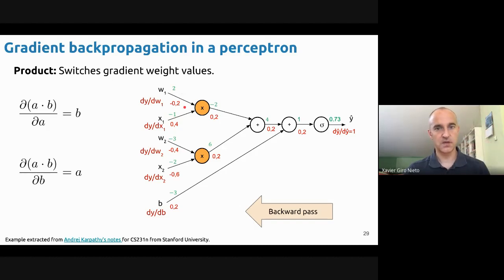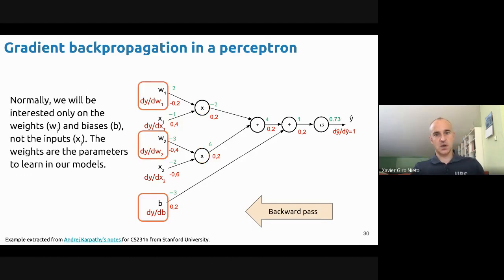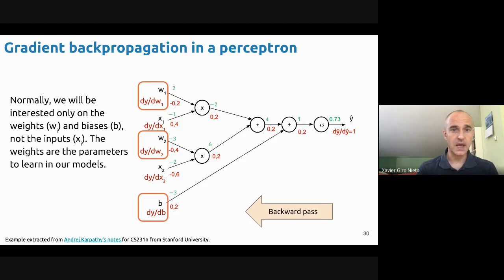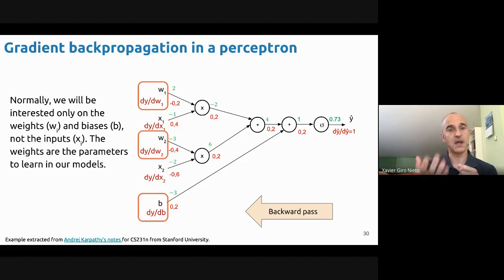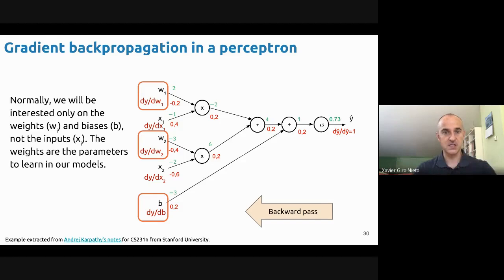We are done — we reached the inputs and managed to compute what we wanted: the partial derivative of the output with respect to w1, w2, and b — the parameters of the model. Based on these partial derivatives, we can now update the values of the weights and bias iteratively, and hopefully decrease the total loss if we do it well.